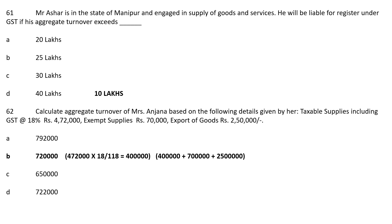MCQ No. 62: Calculate aggregate turnover of Mrs. Anjana based on the following details — Taxable supply including GST at 18%: Rs 4,72,000; Exempt supply: Rs 70,000; Exports of goods: Rs 2,50,000. The correct answer is Rs 7,20,000. First, take Rs 4,72,000 × 100/118 = Rs 4,00,000 (excluding GST). Then add: Rs 4,00,000 + Rs 70,000 + Rs 2,50,000 = Rs 7,20,000.